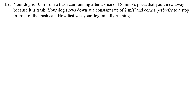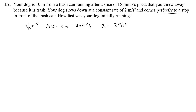Your dog is 10 meters from a trash can, running after a slice of pizza. He slows down at a constant rate of 2 meters per second squared and comes perfectly to a stop in front of the trash can. How fast was your dog initially running? V-naught is what we want; delta x is 10 meters, final velocity is 0, and since the dog moves right and decelerates, the acceleration is negative 2 meters per second squared.